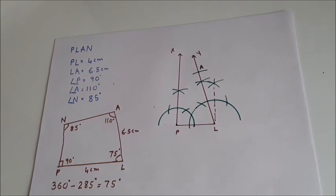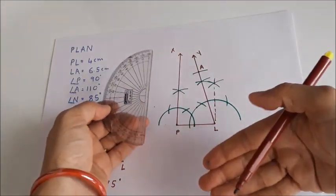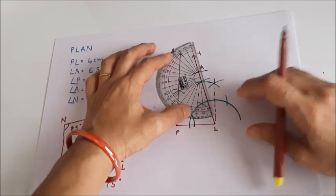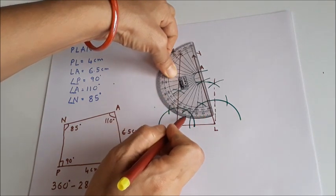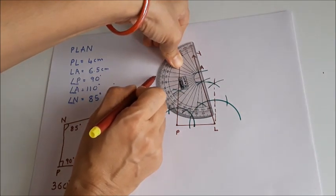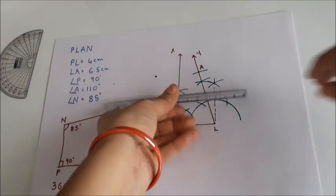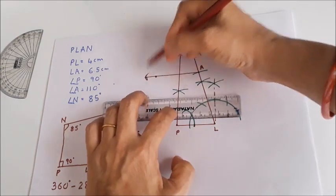At A, we have to construct an angle of 110 degrees. Since 110 degrees cannot be drawn using a compass alone, we use a protractor. I align 0 on the protractor with point A along the base line LA, count to 110 degrees, and mark that point. I join A with this point to get the 110 degree ray, which is named AZ.